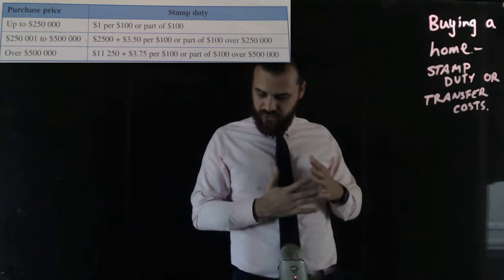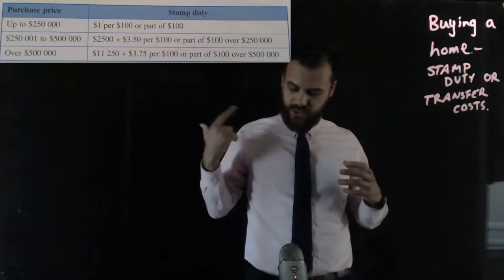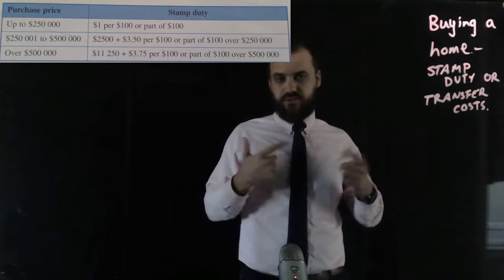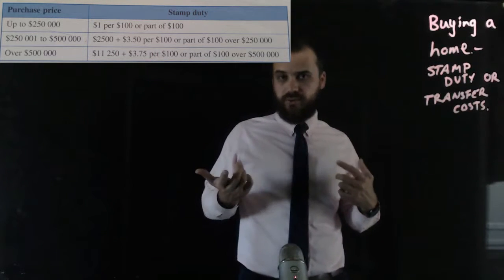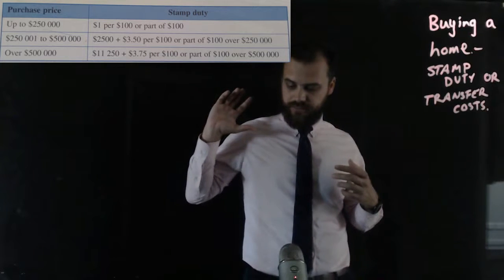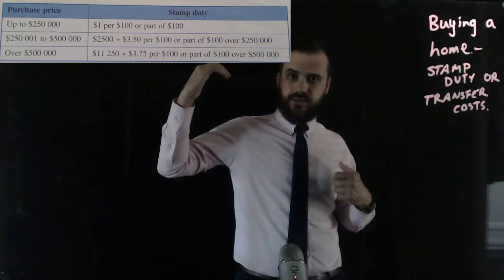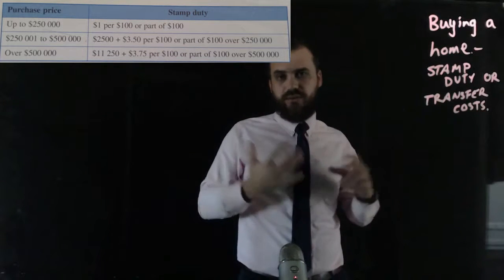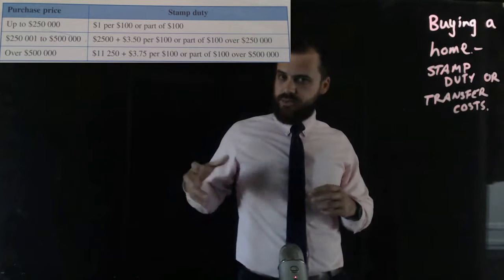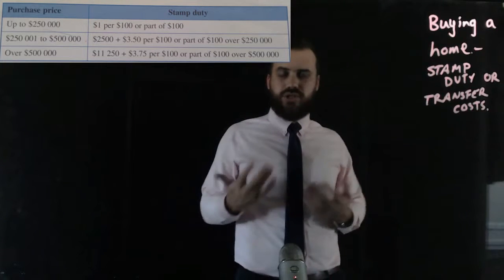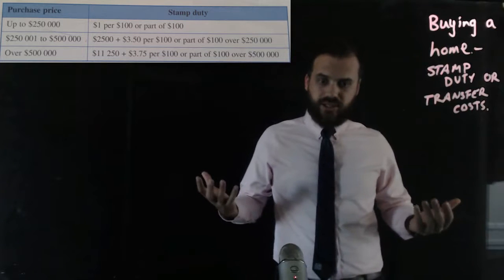If it's over five hundred thousand dollars, you're going to have to pay eleven thousand two hundred and fifty plus three dollars seventy-five per hundred or part of one hundred. Those are the three tiers of stamp duty. This textbook is a little bit outdated so stamp duty has changed over time, but as long as you have a table like this you should be able to calculate it.